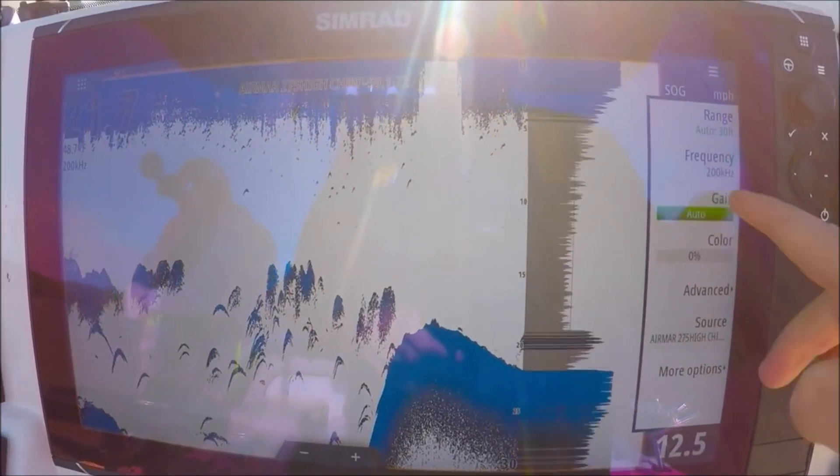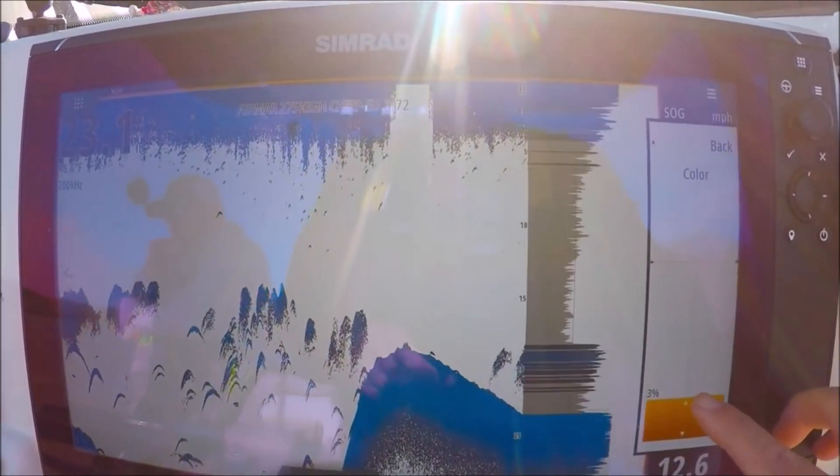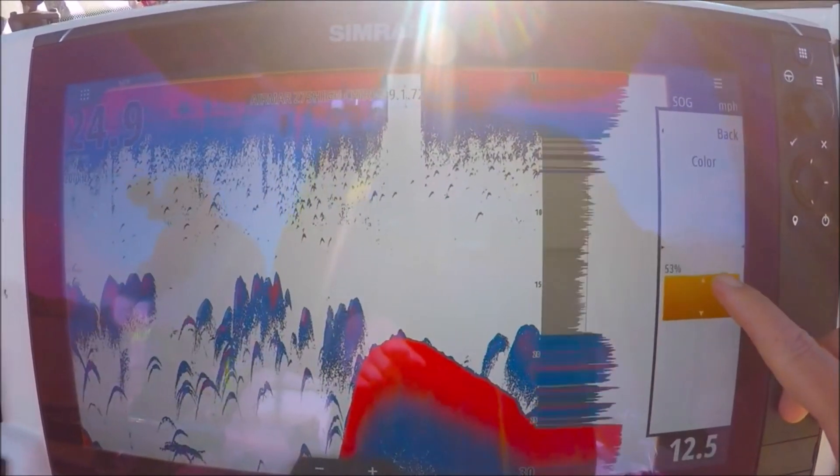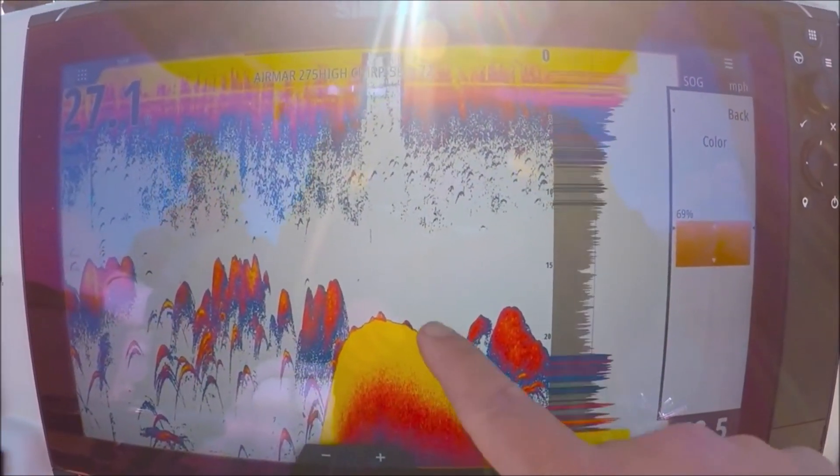My gain is set at auto, color is zero. I'm going to go and turn my color up. Okay, in this palette yellow is the strongest return, so you can see yellow is the bottom.